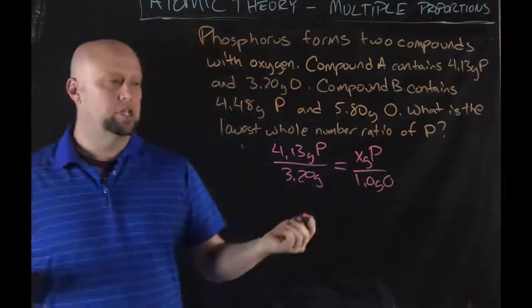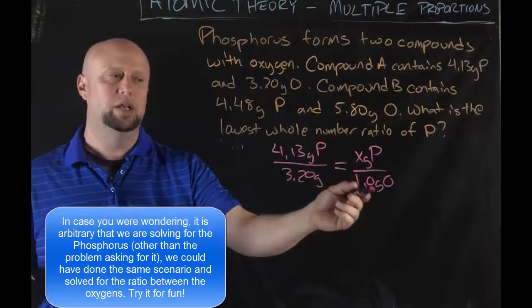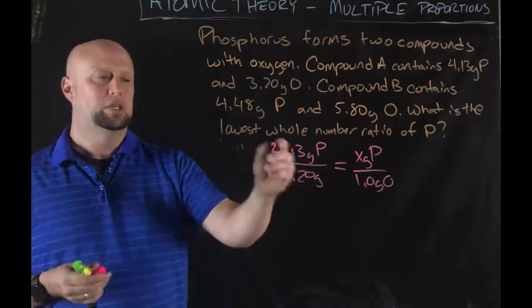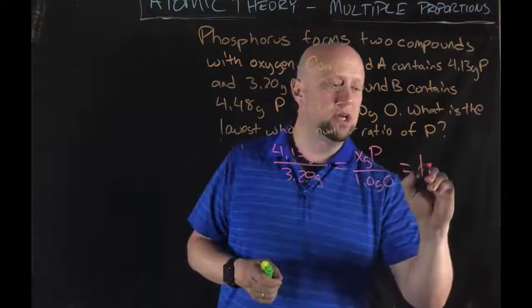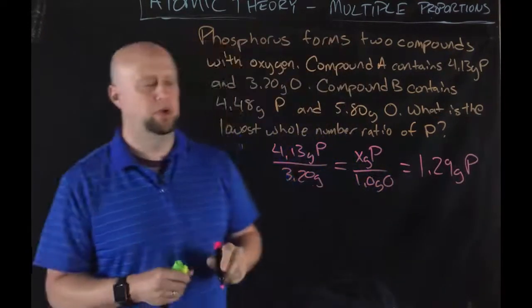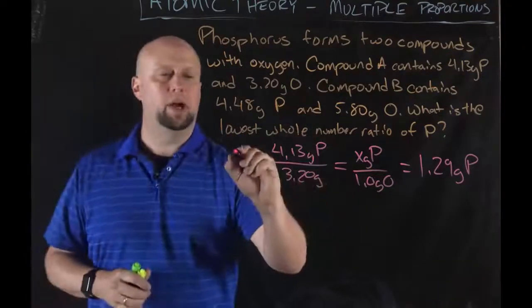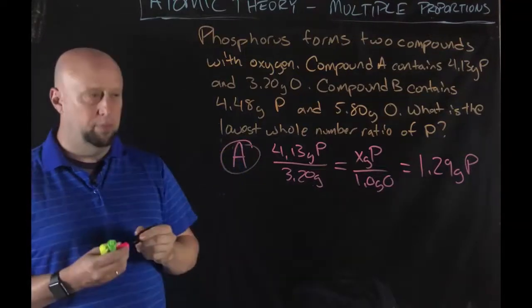We're going to ratio and proportion that out. I've got 4.13 grams of phosphorus to 3.2 grams of oxygen. I want to see how many grams of phosphorus that is, so X grams of phosphorus per one gram of oxygen. Cross multiply - I don't really even need to do that because that's a one. So 4.13 divided by 3.20, that's going to give us 1.29 grams of phosphorus. That's not the answer. That's the first part of the answer for compound A.